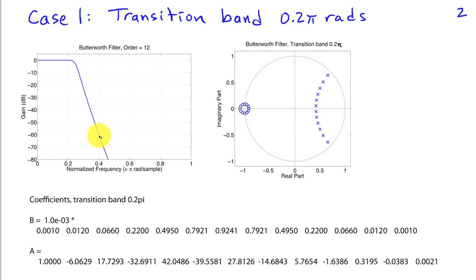We have an attenuation that exceeds 60 dB for 0.4π and above and we could zoom in here to see that the passband also has a gain of 1 or 0.99 at the edge and therefore would satisfy the specifications.